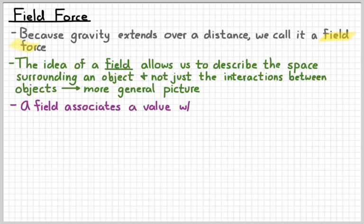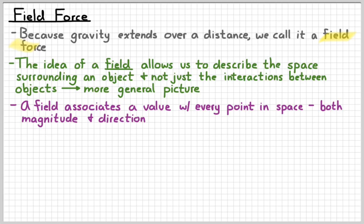So, it's important to understand that a field associates a physical value of something with every point in space, both direction and magnitude, i.e. fields are vectors. So, if we think about the interaction between the Earth and the Moon as being a result of the Moon being in the Earth's gravitational field, it gives us a little bit more general picture. And for other forces, the idea of a field will be even more important.